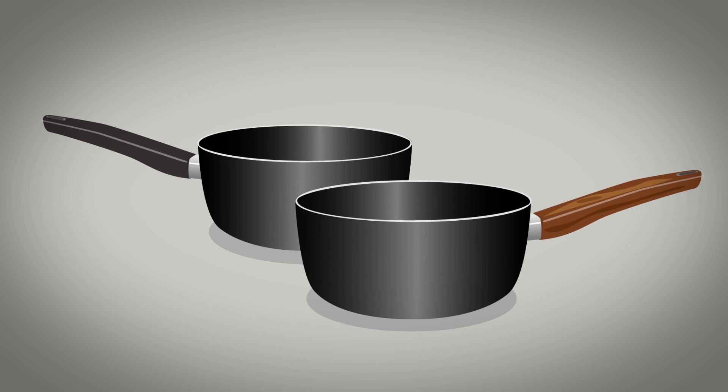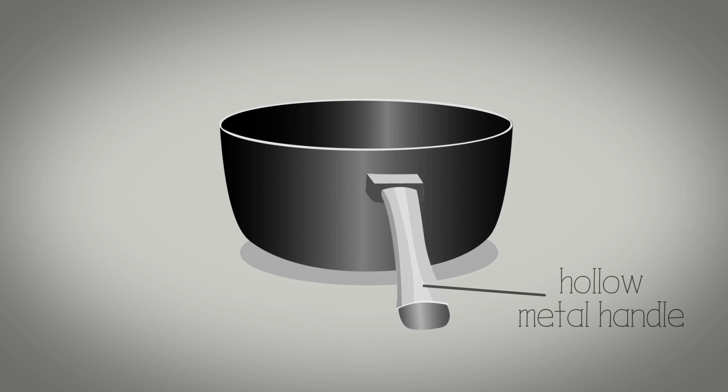For example, pan handles are often made of plastic or wood so that they're comfortable to hold. Some pans have metal handles which are hollow inside, so the air they contain prevents the metal from becoming too hot as air is a heat insulator.